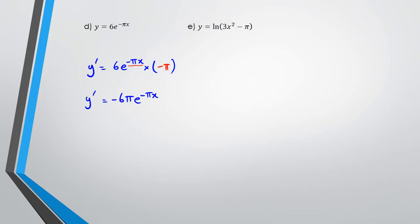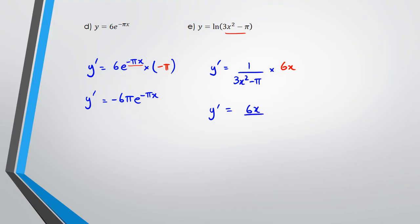For question (e), we've got y equals ln(3x squared minus pi). The differentiation is 1 over (3x squared minus pi) multiplied by the differentiation of whatever's inside the bracket, which is 6x. So the answer is 6x divided by (3x squared minus pi).